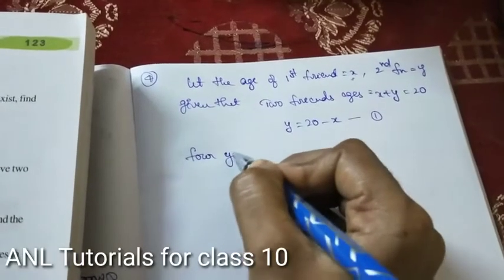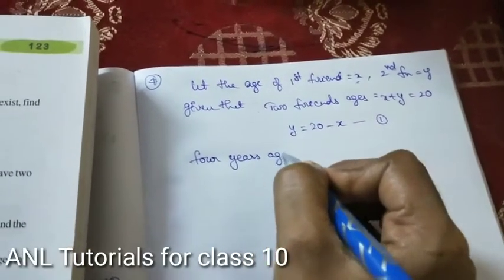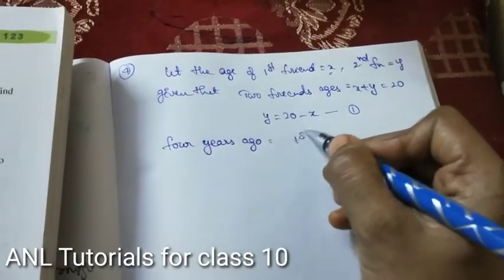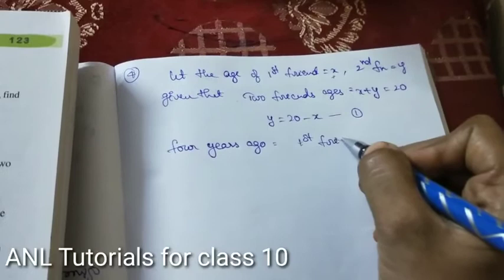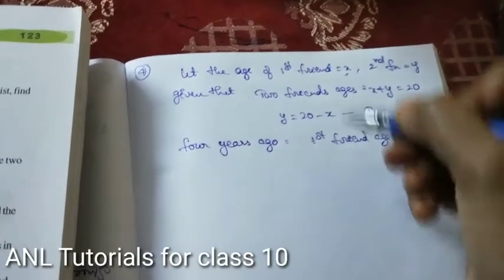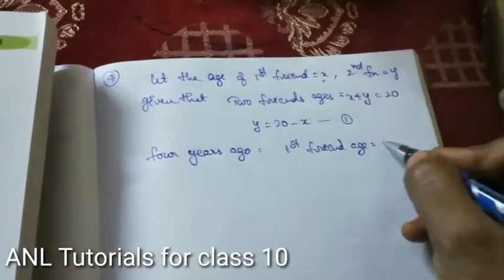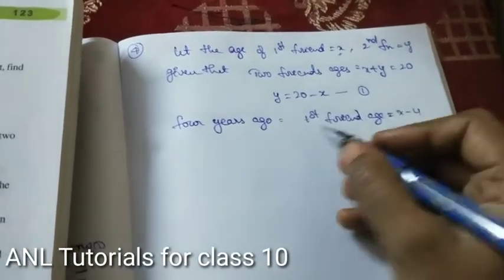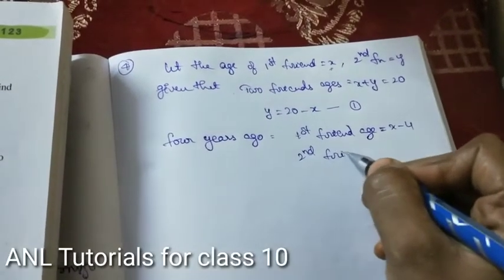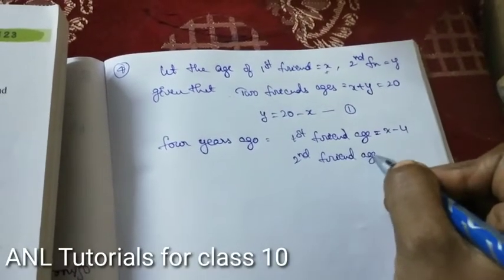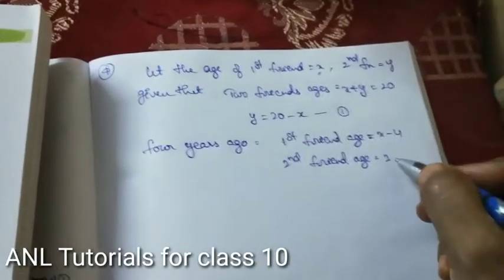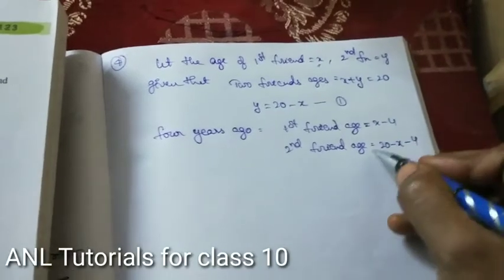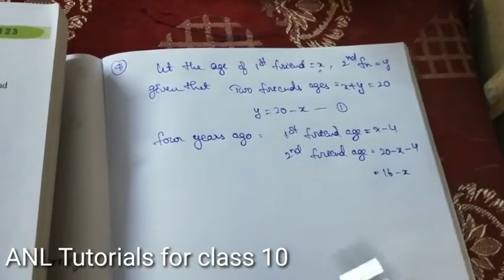Four years ago, the first friend's age was x minus 4. The second friend's age four years ago was (20 minus x) minus 4, which equals 16 minus x.